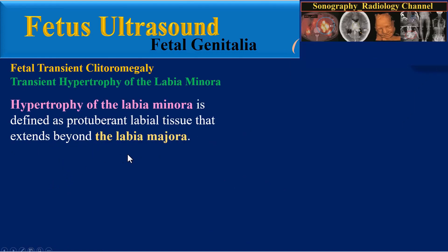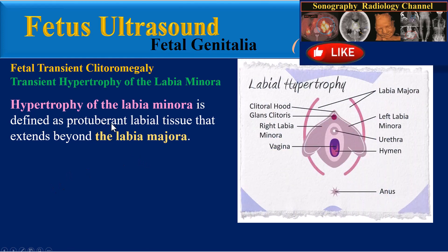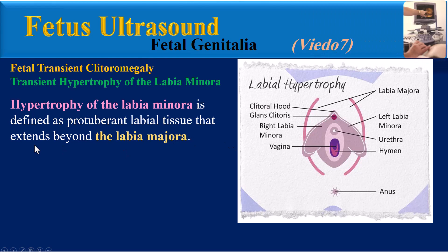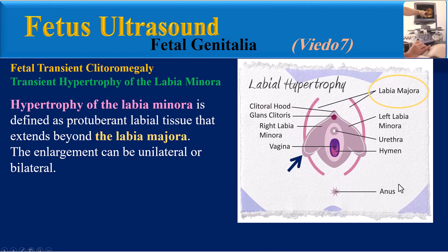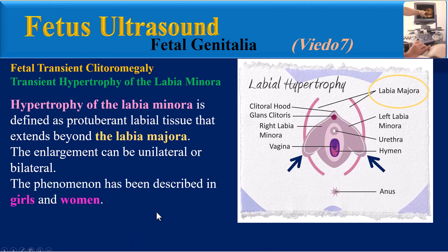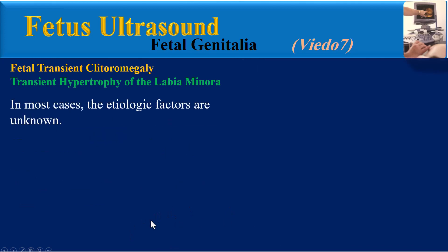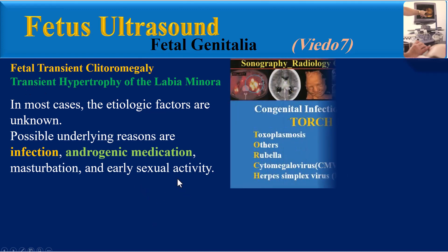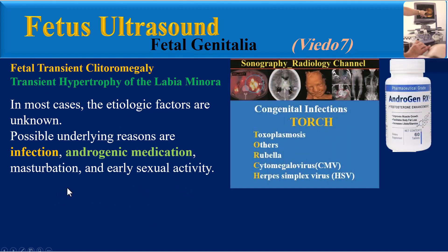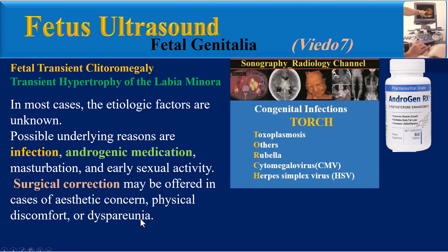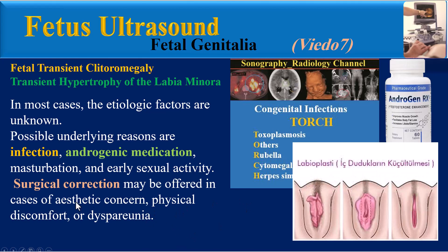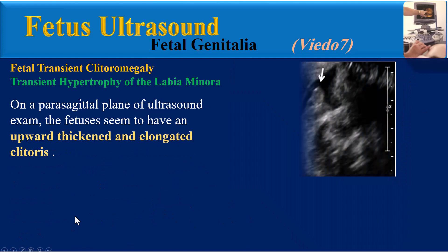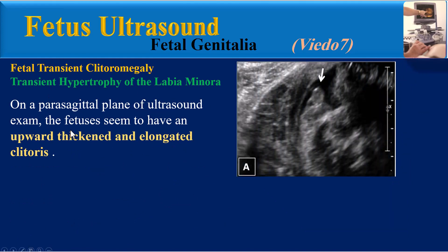Regarding transient hypertrophy of the labia minora, hypertrophy of the labia minora is defined as protuberant labial tissue that extends beyond the labia majora. The enlargement can be unilateral or bilateral. This phenomenon has been described in girls and women. Possible underlying reasons include infection, androgenic medication, masturbation, and early sexual activity. Surgical correction may be offered in cases of aesthetic concern, physical discomfort, or dyspareunia.